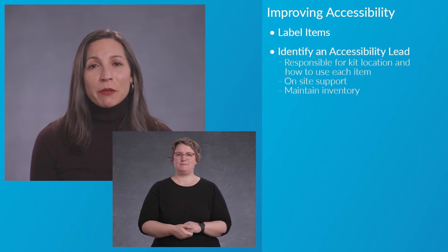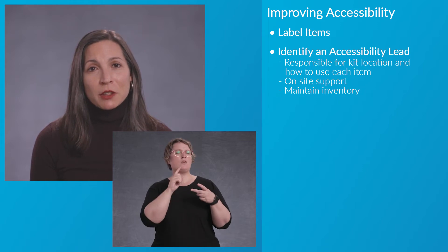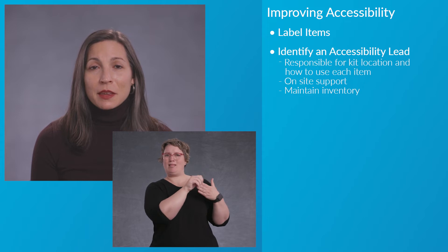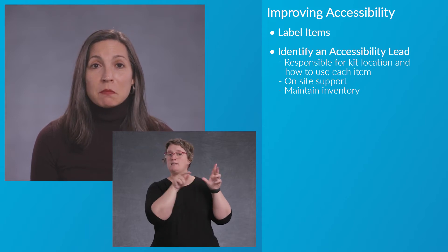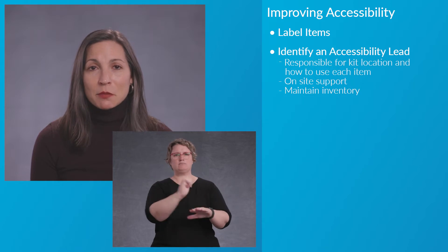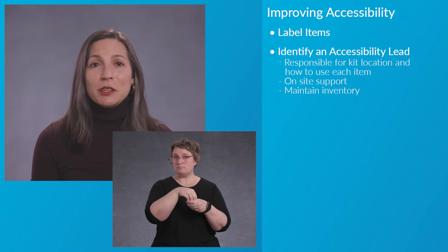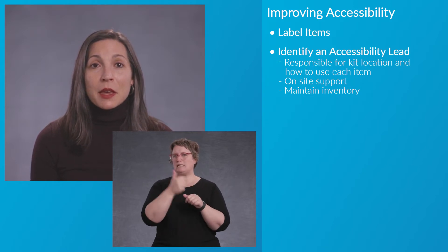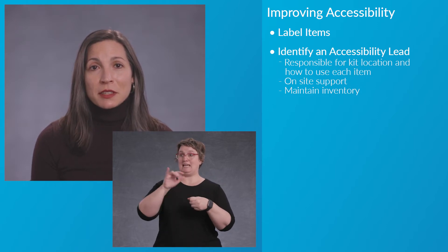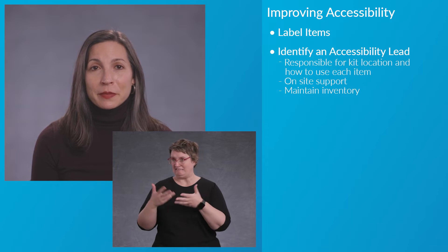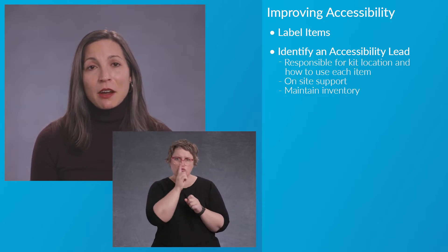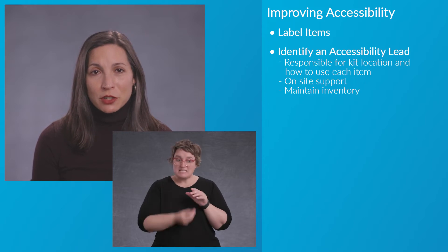Second, we recommend that you identify someone in your organization who can be the lead for accessibility. This person can be responsible for knowing where the accessibility kit is, what's in it, and how to use each item. Be the person on site to answer questions if staff or volunteers need support. Take a regular inventory of the items and contact OHA with questions or concerns.